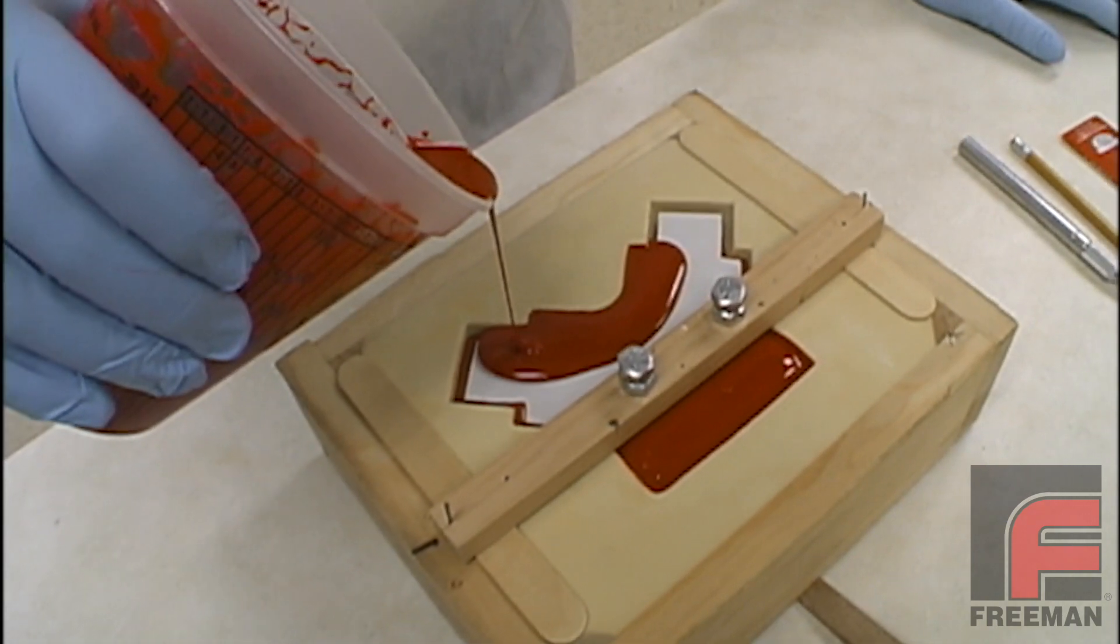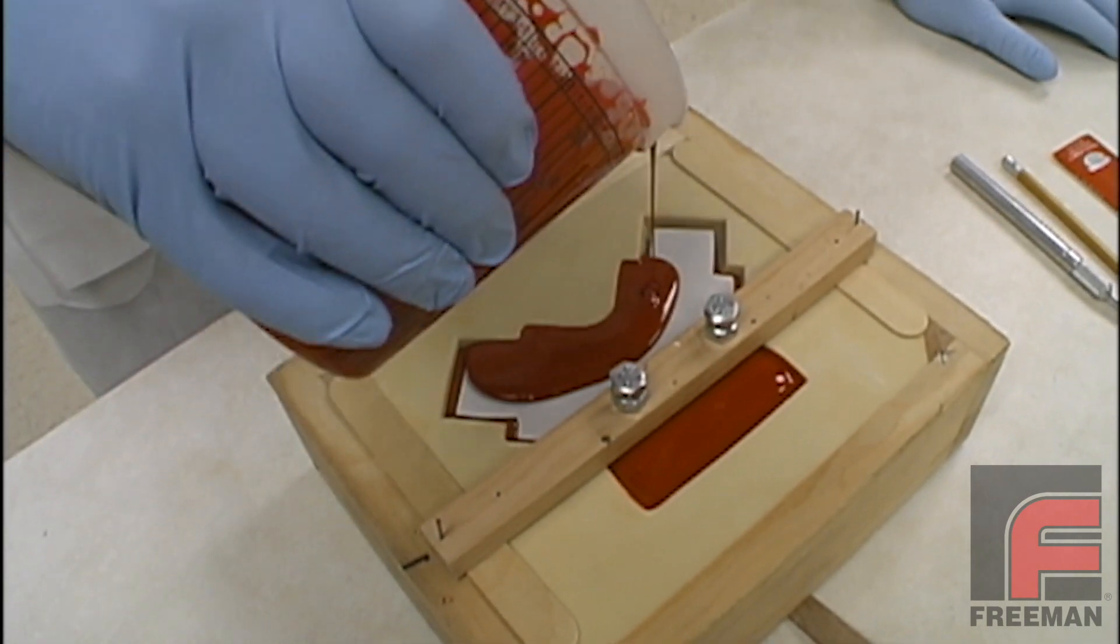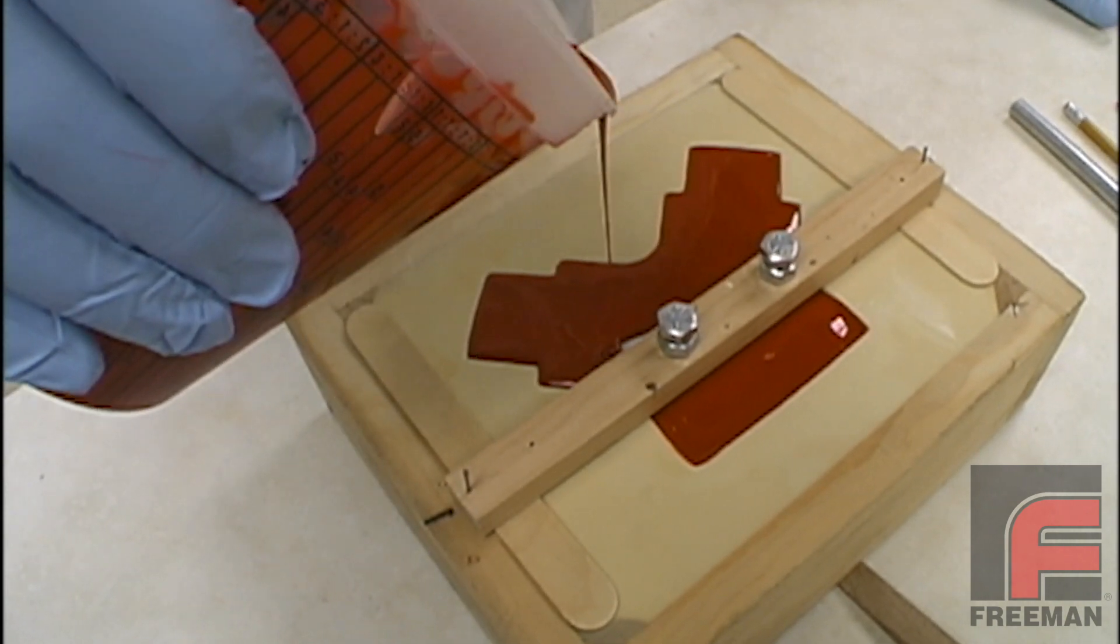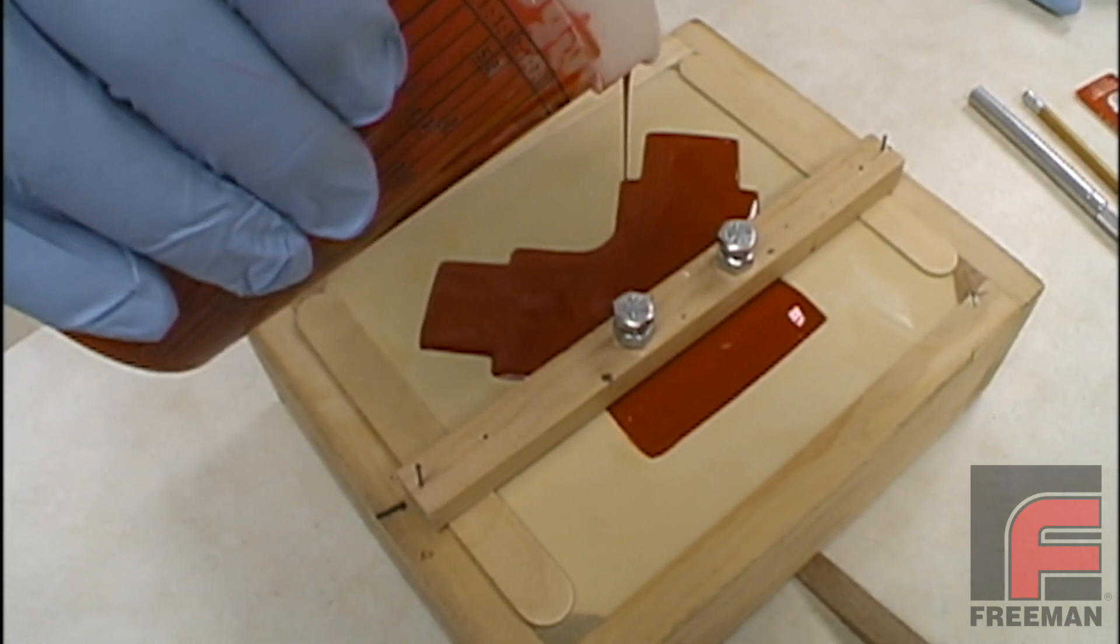When possible, it is desirable to completely encapsulate your core as we have done here. This technique eliminates the possibility of the core delaminating from the surface cast material.